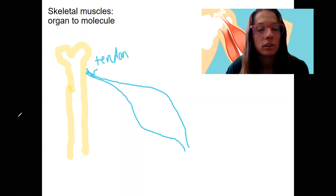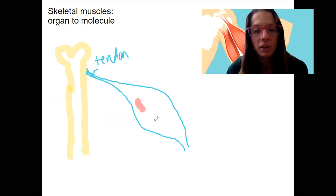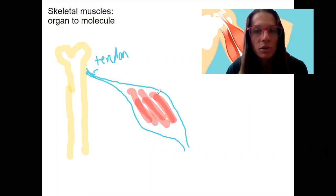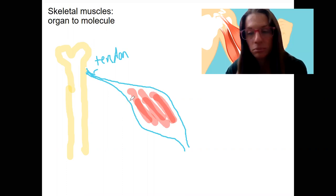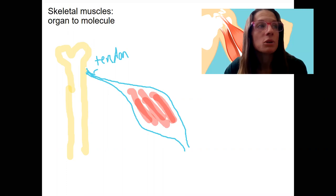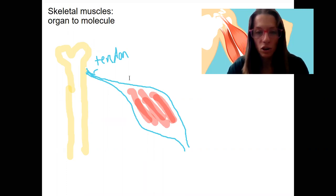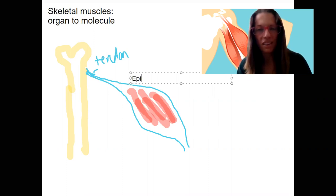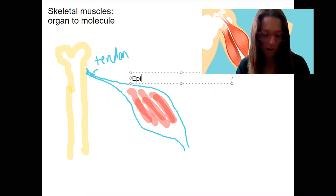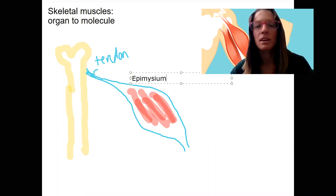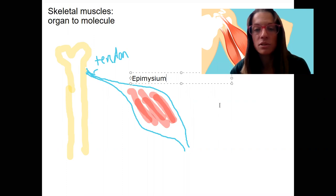Inside that structure we have this muscle, and we'll talk about the levels. There are going to be fascicles, made up of cells, that are made up of molecules. First, what I want to do is tell you what this outside layer is called. 'Epi' means on top of or above. This is 'epi,' and this stuff is muscle, so instead of other words you've heard, this is going to be 'myseum.' Epimysium is the connective tissue that surrounds the muscle.